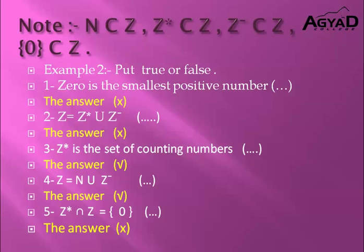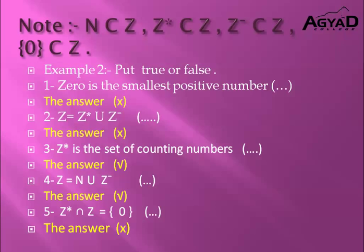Now let's solve Example 2: Put true or false. Number 1: Zero is the smallest positive number. Let's think — we placed zero on the number line in the middle. It does not belong to the positive numbers nor the negative numbers. Zero is neither positive nor negative. Therefore, this statement is false.